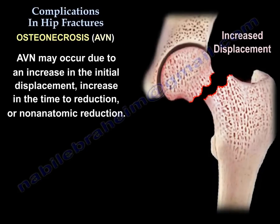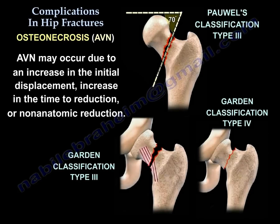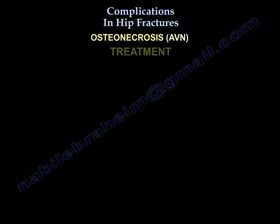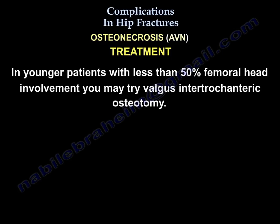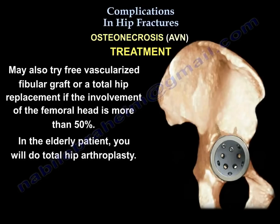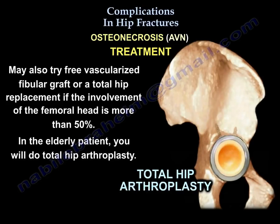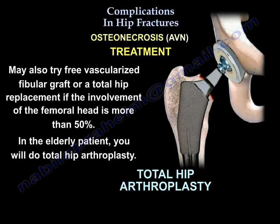AVN can occur due to increased initial displacement, increased time to reduction, or non-anatomic reduction. In a younger patient with less than 50% head involvement, you may try valgus intertrochanteric osteotomy or free vascularized fibular graft. If head involvement is more than 50%, total hip replacement is indicated. In the elderly, you will perform a total hip arthroplasty.